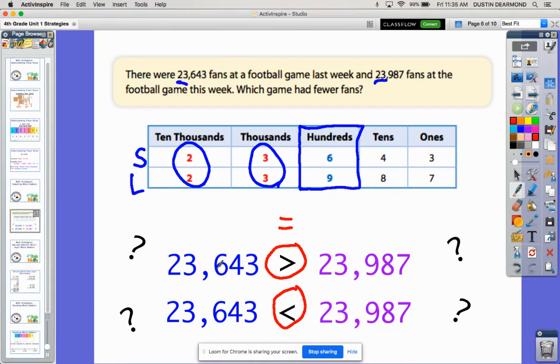Remember we've already looked at this—I know that 643 is smaller than 987, so I know this number over here is the smallest number. This is the smaller number, that's the larger number, just like we had up here.